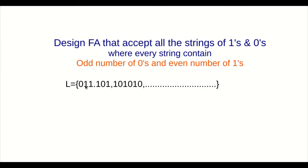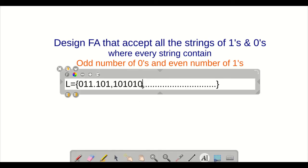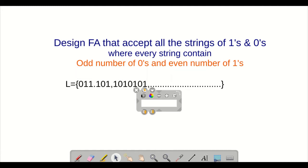For example, the string 011 has only one 0 which is odd, and two 1s which is even. Then 101, then 101010 — here we have three 0s, which is an odd number, and four 1s. So the string should have three 0s and four 1s. Number of 0s should be odd and number of 1s should be even.